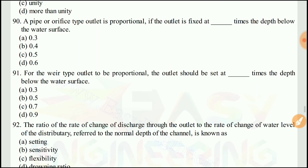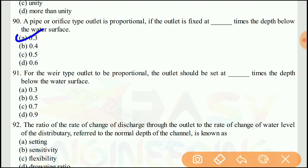Question 89: A pipe or orifice type outlet is proportional if the outlet is fixed at 0.3 times the depth below the water surface. The right answer would be A.